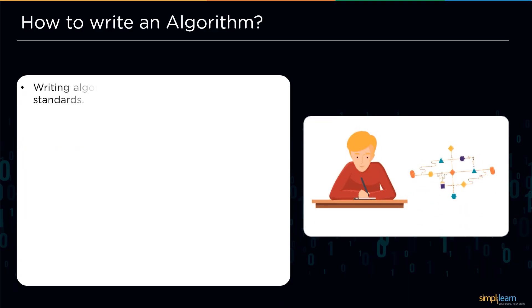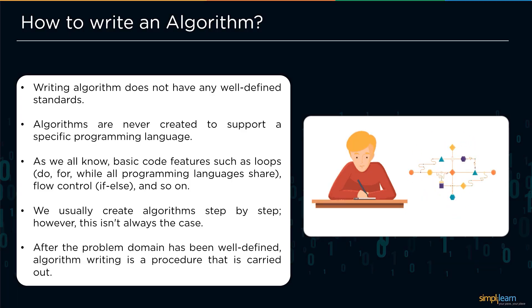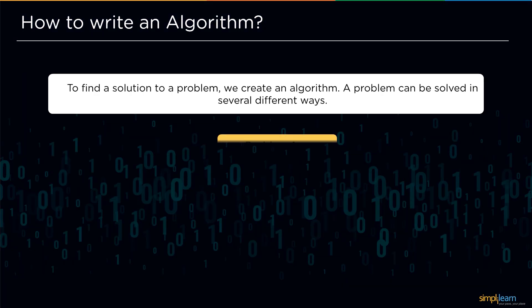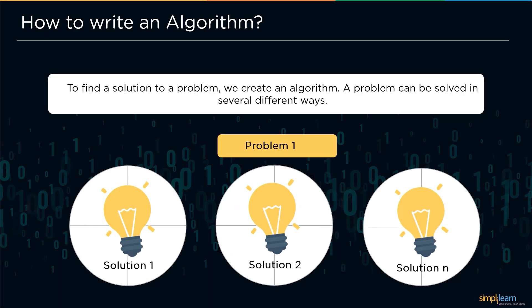Now let's move ahead and understand how to write an algorithm. Writing an algorithm does not have any hard and fast rules. Algorithms are never created to support a specific programming language. Algorithms should be capable enough to support conditional statements such as if, if-else, switch, etc., and also it must be capable to execute the iterative statements such as for loop, while loop, do-while loop, etc. We usually create algorithms in a step-by-step manner. After the problem domain has been well-defined, algorithm writing is a procedure that is carried out. We build an algorithm to find a solution to a problem. A problem can be resolved in a variety of ways.